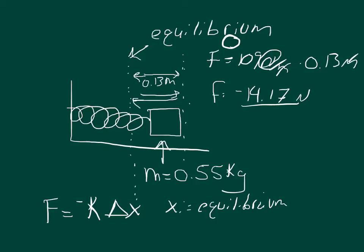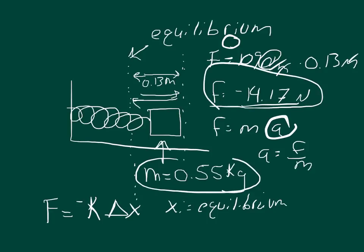Then in part B, it says at that instant find its acceleration. We know that force equals mass times acceleration, so we can solve for acceleration: acceleration equals force divided by mass. We have the force and we have the mass from the problem.